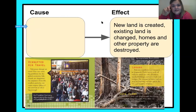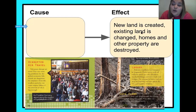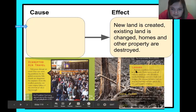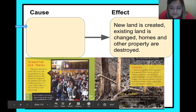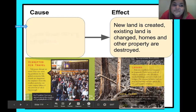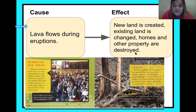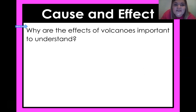Geothermal heat is produced in the Earth's core and mantle — that's why they can use that water and steam to produce electricity. Good job, fourth graders! One more: new land is created, existing land is changed, and homes and other property are destroyed. What causes all of these changes? It's the lava flows — that is what can make new land, change existing land, and destroy homes and property. You guys are pros at this already!